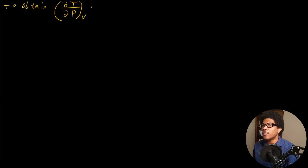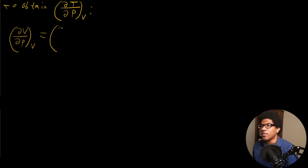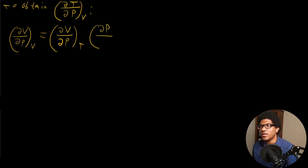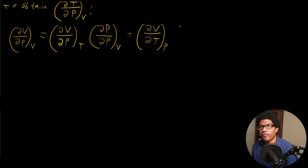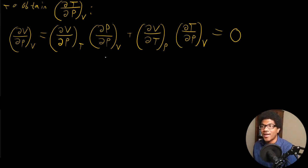So the derivative we'll need to take is DV/DP at constant volume. Starting from the total derivative, we'll have (∂V/∂P) at constant T times DP/DP at constant volume, plus (∂V/∂T) at constant pressure times DT/DP at constant volume. We know this whole thing is going to be equal to zero since we're differentiating volume at constant volume. Again, the DP/DP term goes to one, so we have one of those terms that cancels out.